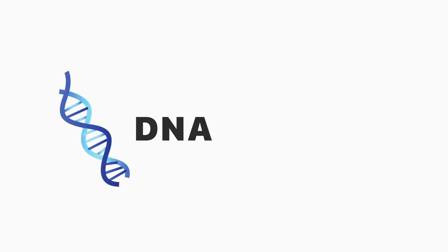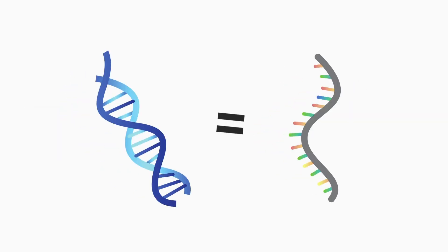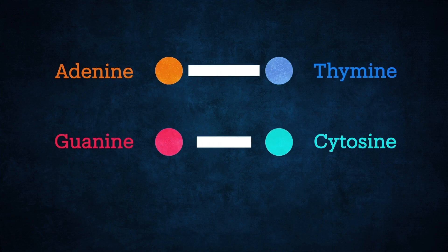In order for that process to happen, DNA must first be converted into something called RNA, or ribonucleic acid. RNA is almost identical to DNA, but there is one important difference. Instead of the base thymine, RNA uses a similar base called uracil.